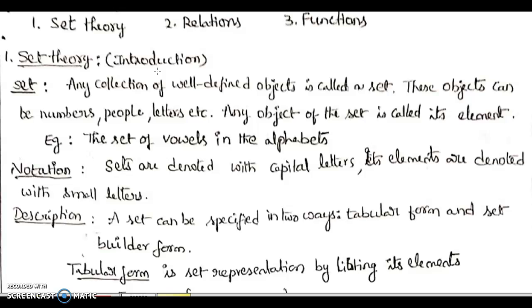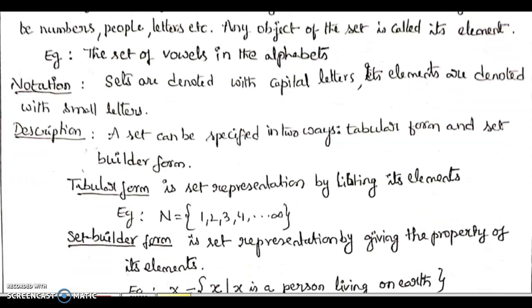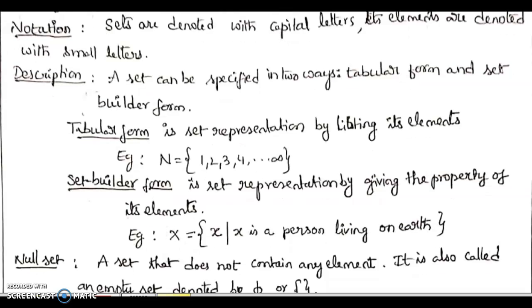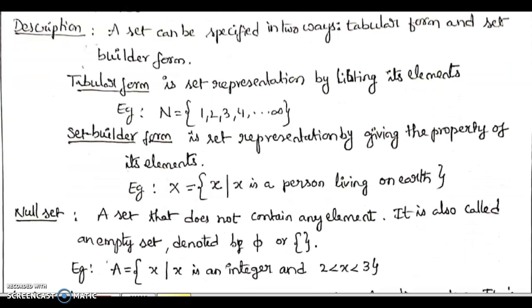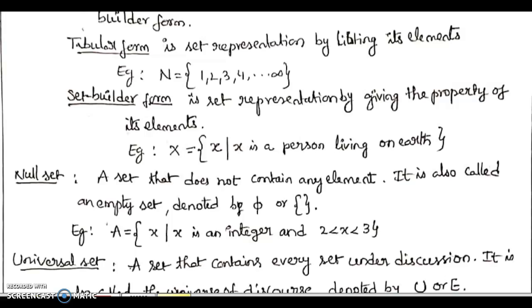Coming to the notation of these sets, any set can be represented using capital alphabets and its elements are always denoted by small letters. Any set can be described in two different ways: the first is the tabular form of the set, and the second one is the set builder form of the set.